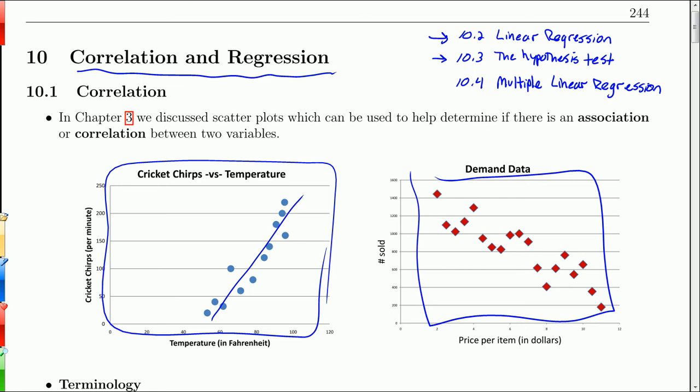And then 10.4 is sort of a teaser section on multiple linear regression. It's really an interesting chapter, but it requires another course in statistics. So it's really just an introduction to multiple linear regression. But it's great stuff, and hopefully it inspires you to take a second course in statistics.